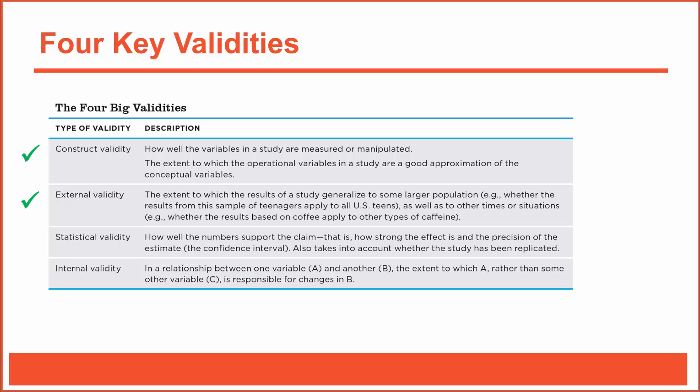To assess external validity, we'll ask how well the results generalize beyond the research study. For example, if our depression research was based on research subjects currently hospitalized for major depression, to what extent will the results from the study apply to other segments of the population? Most people, of course, are not hospitalized for their depression. Would the new drug be effective on those populations?